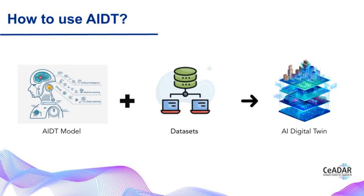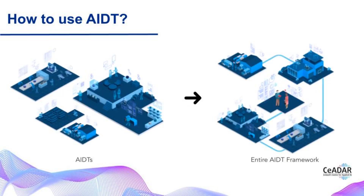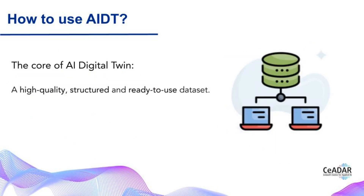This allows us to simulate different scenarios and unlock more predictive use cases. The AI digital twin can become even more powerful when interconnected, allowing organizations to simulate complex relationships between different entities and generate richer behavioral insights for more complex use cases. As enterprise metaverses begin to form, companies can connect digital twins from different areas, functions, and operations. The core of AI digital twin is the high-quality, structured, and ready-to-use dataset.